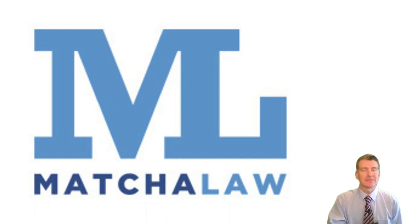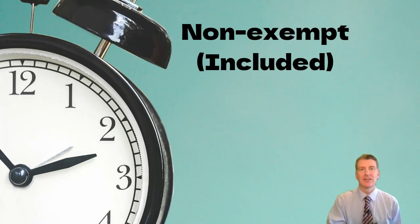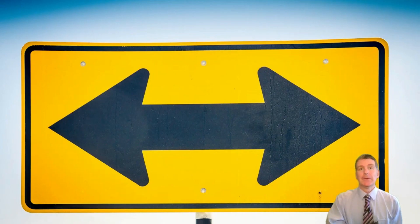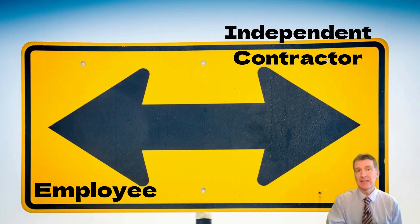Labeling, or classifying, workers can happen in two ways. Sometimes everyone agrees that a worker is an employee, but they disagree on what rights they have. For example, some employees get paid overtime and some don't. That has to do with classifying employees as non-exempt, meaning they get overtime, or exempt, meaning they don't. There's another situation in which it's not clear if a worker is an employee at all, and those workers can be classified as either employees or independent contractors. And that's the focus of this video.